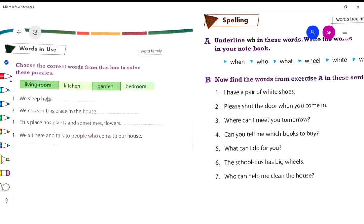We sleep here - bedroom. We cook in this place in the house - kitchen. This place has plants and sometimes flowers - garden. We sit here and talk to people who come to our house - living room.